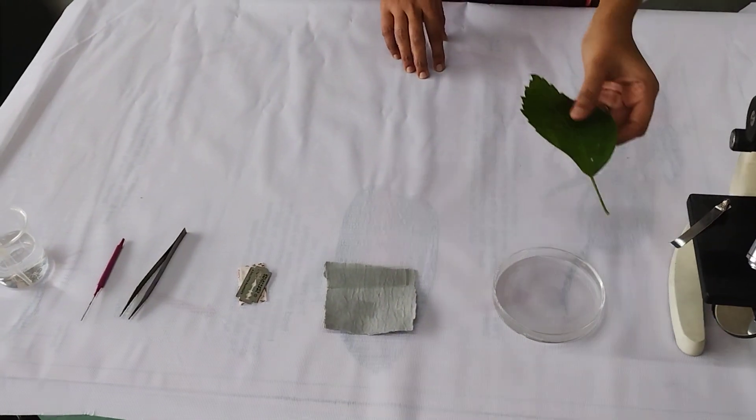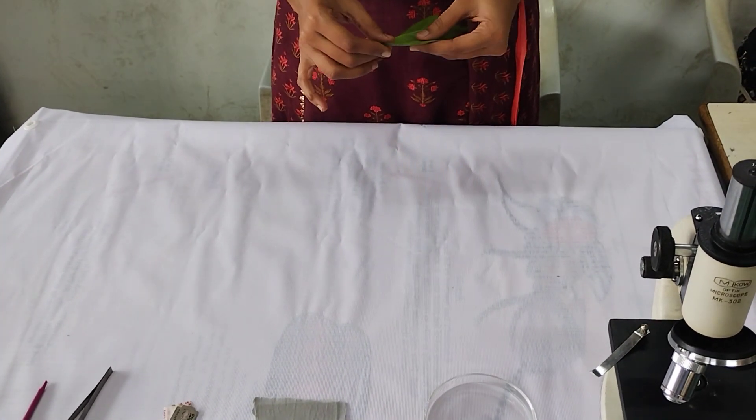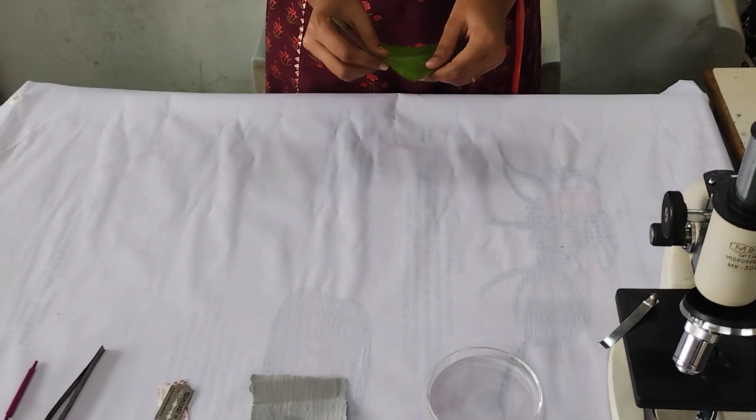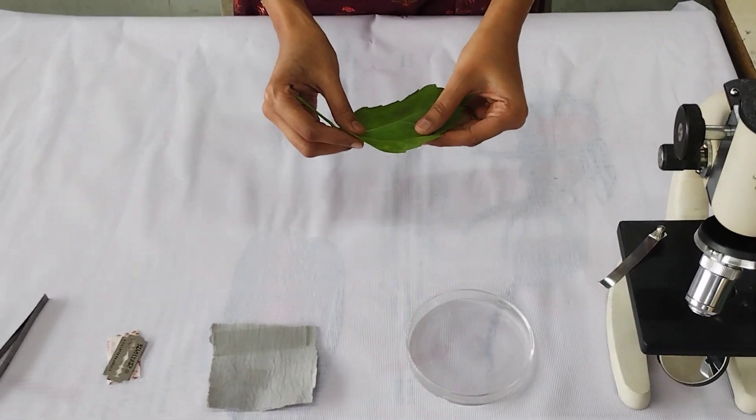First of all, we have to take the dichot leaf and we have to take the epidermis, that is lower epidermis of this leaf, to observe the structure and distribution of stomata.